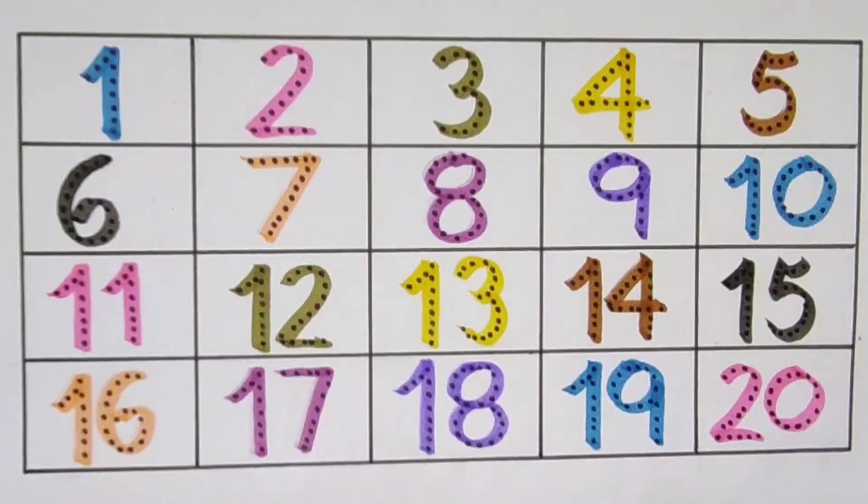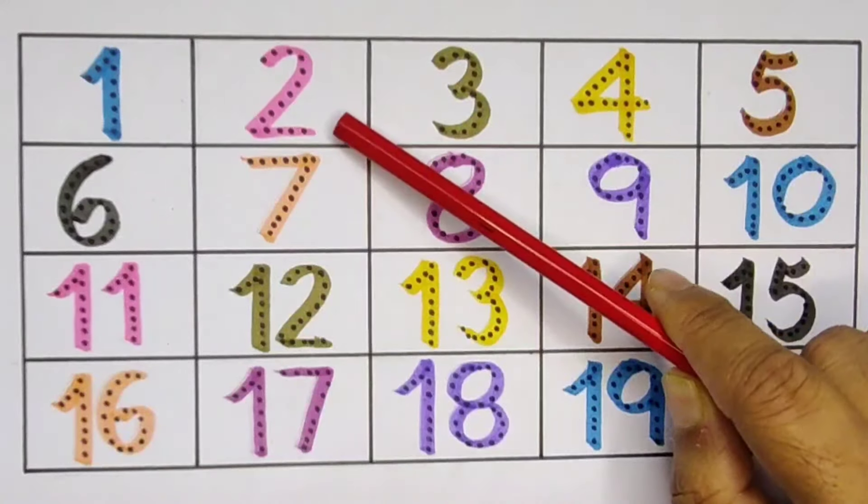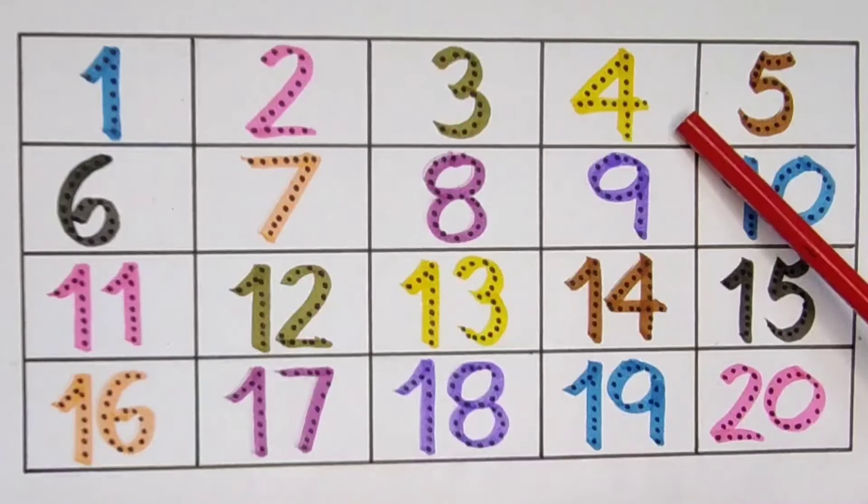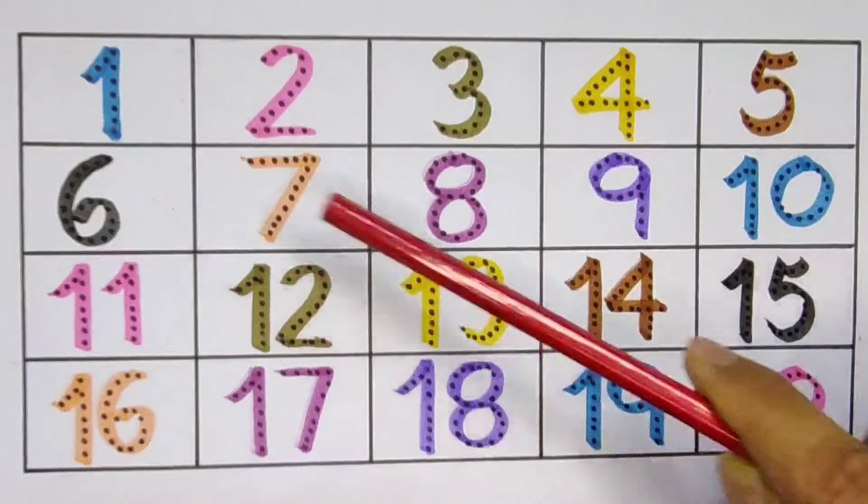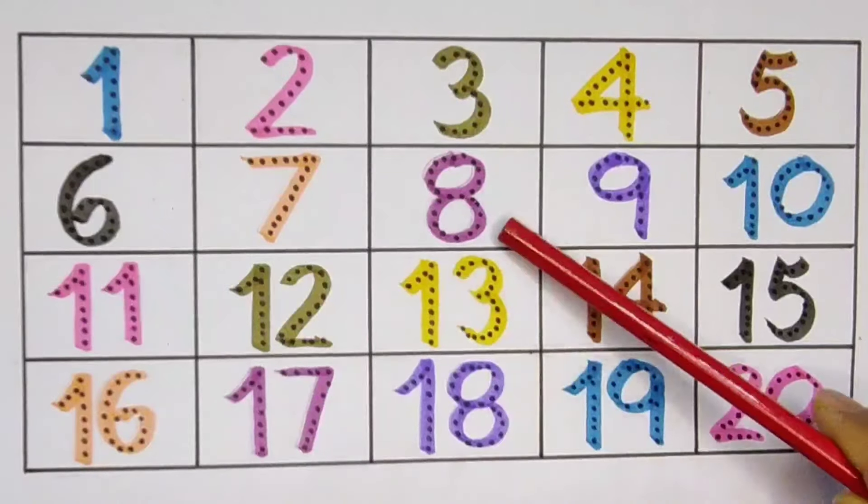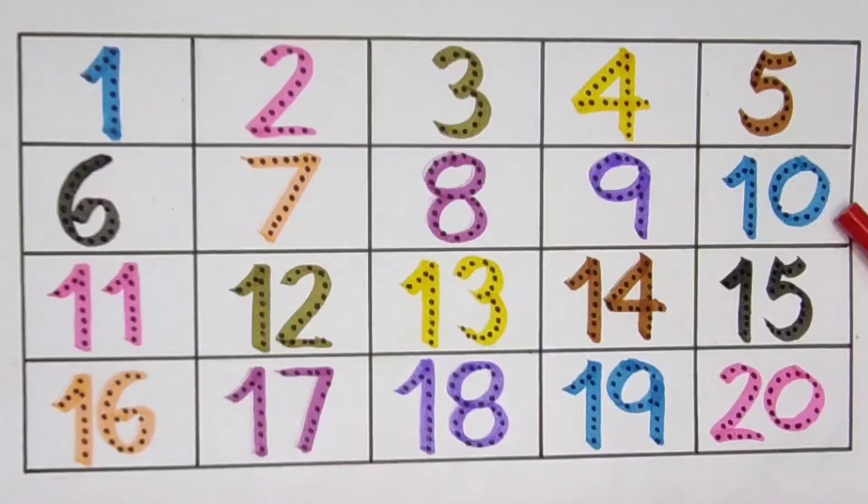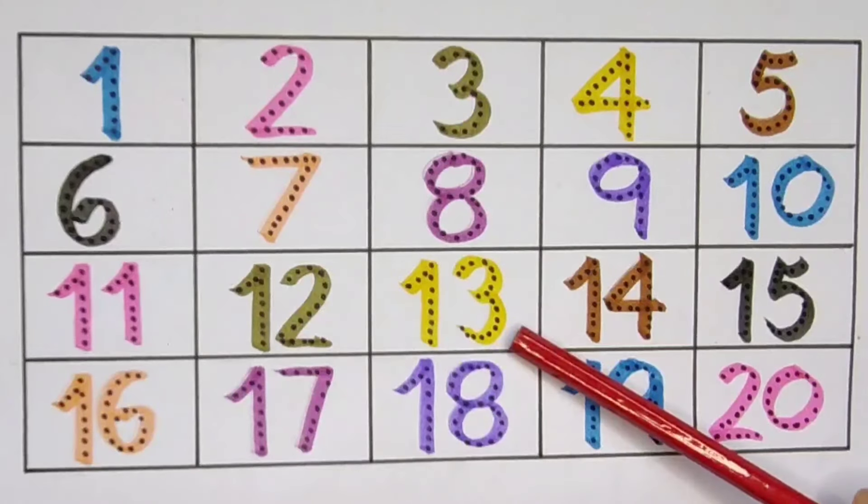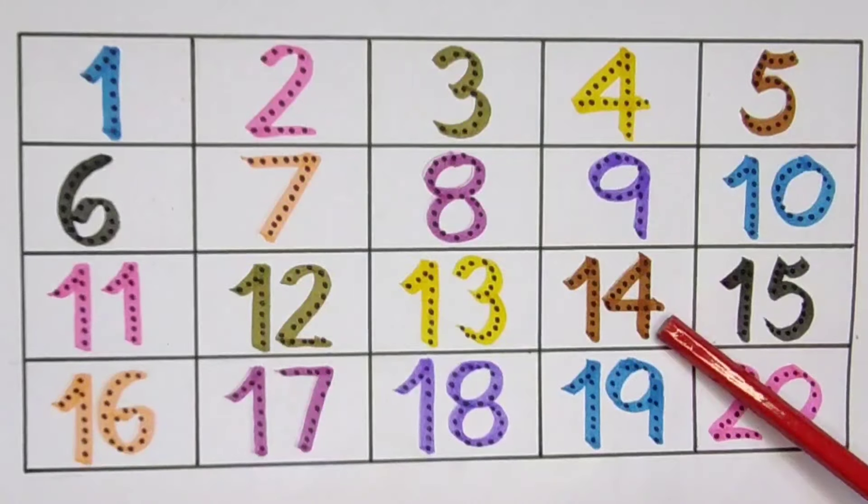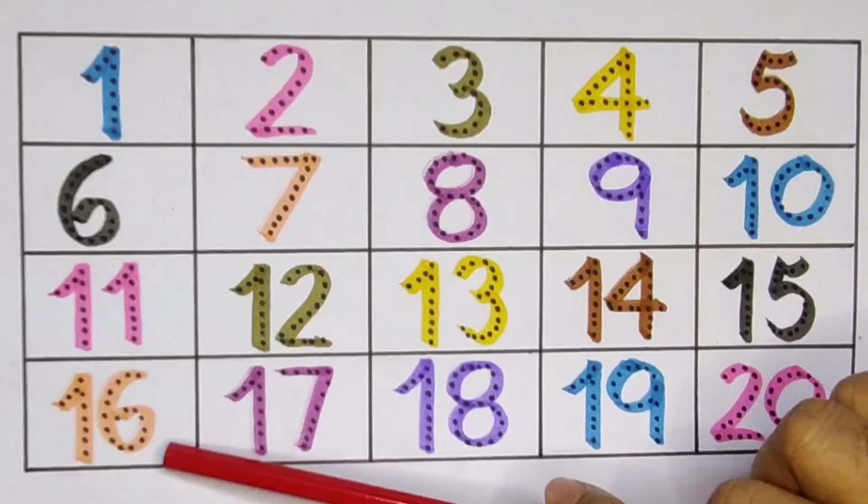What did we learn? We learned 1, 2, 3, 4, 5, 6, 7, 8, 9, 1, 0, 10, 1, 1, 11, 1, 2, 12, 1, 3, 13, 1, 4, 14, 1, 5, 15, 1, 6, 16, 1, 7, 17.